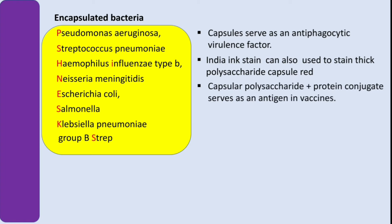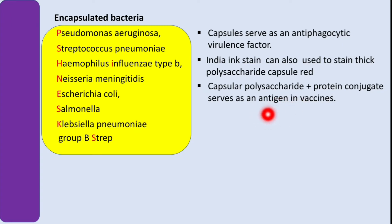The capsular polysaccharide can be combined with a conjugate protein, and that formulates the antigen used in vaccines. You'll see that three of these bugs are ones we need vaccines against — I'll tell you about those in just a moment.